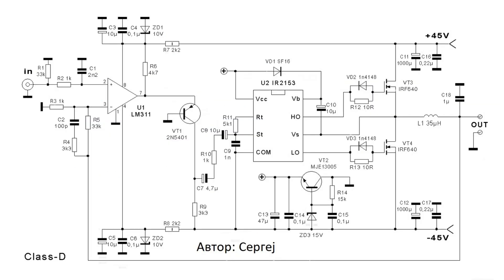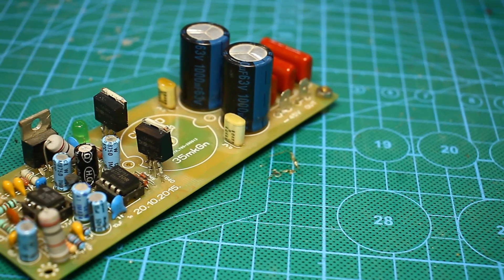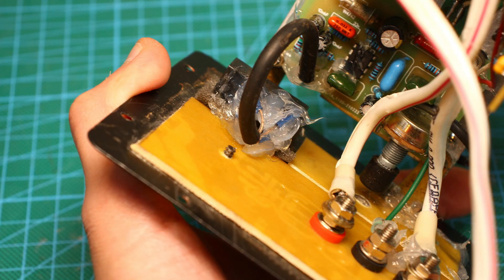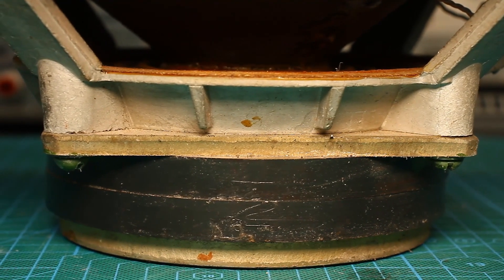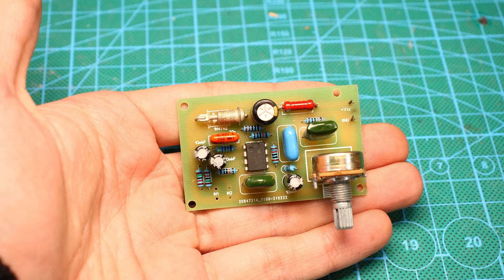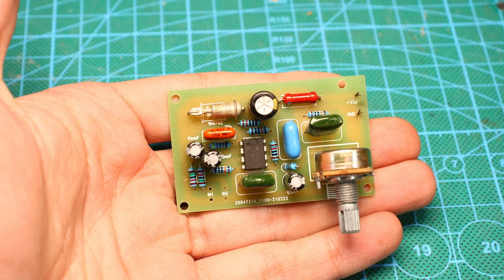This amplifier can give out power of 150W and even up to 300W to the load with the appropriate power supply. Technically, with such parameters, it can burn the 75 GDN speaker. Therefore, after the system is fully connected, the volume level must be adjusted by rotating the variable resistor on the board.